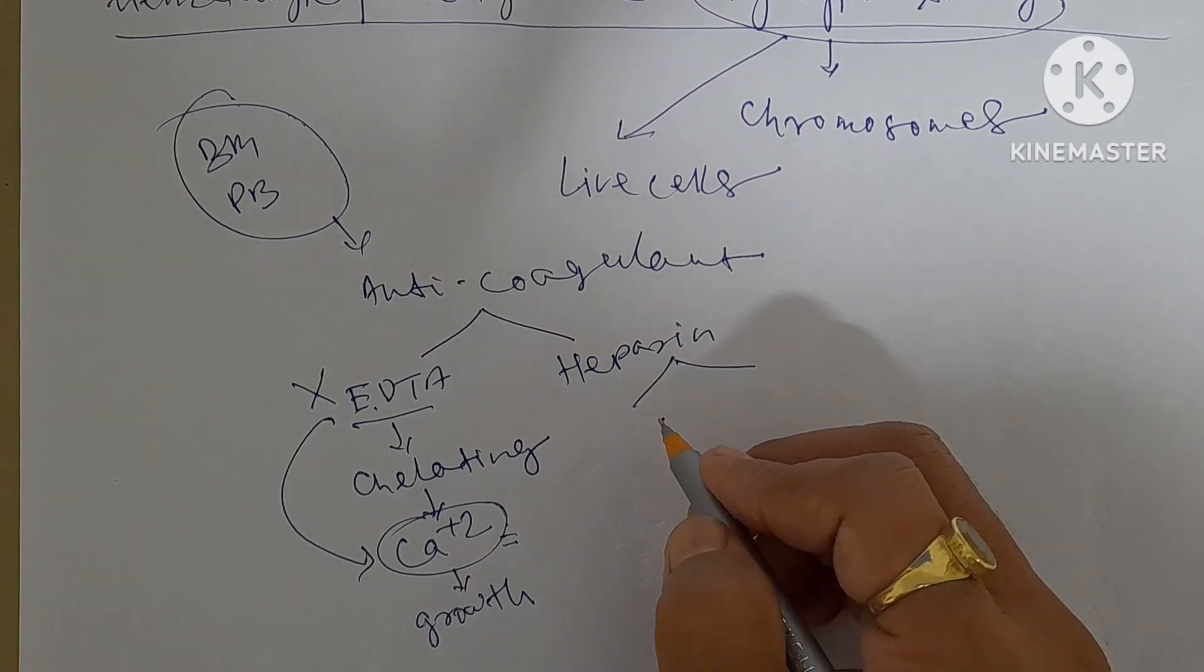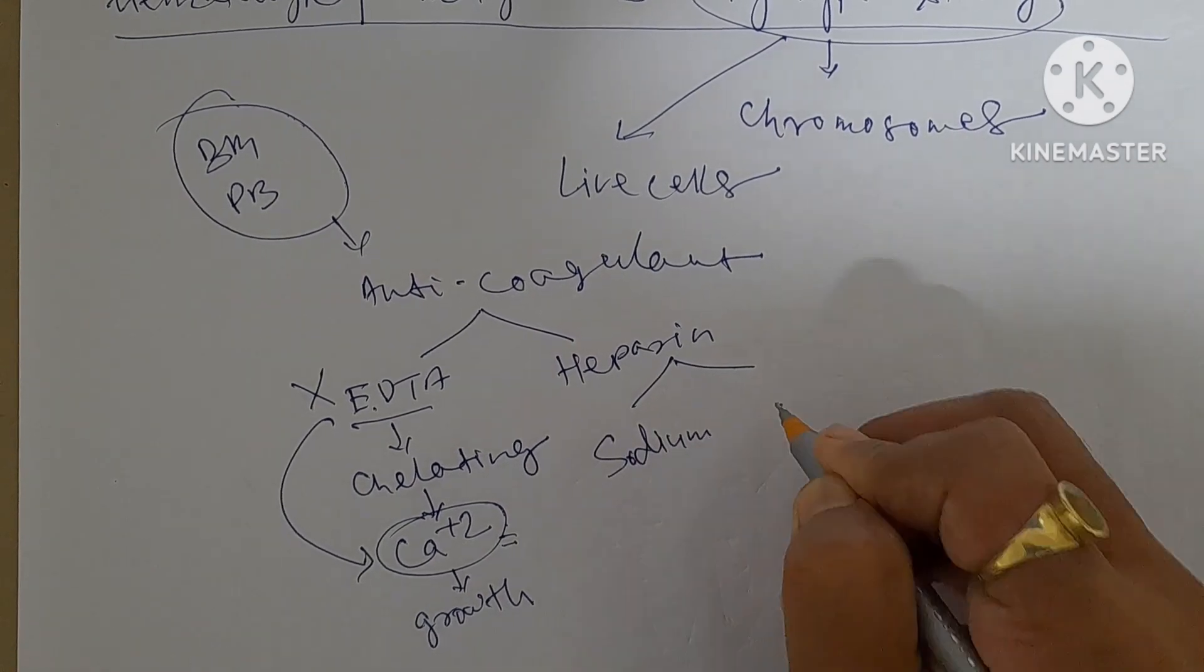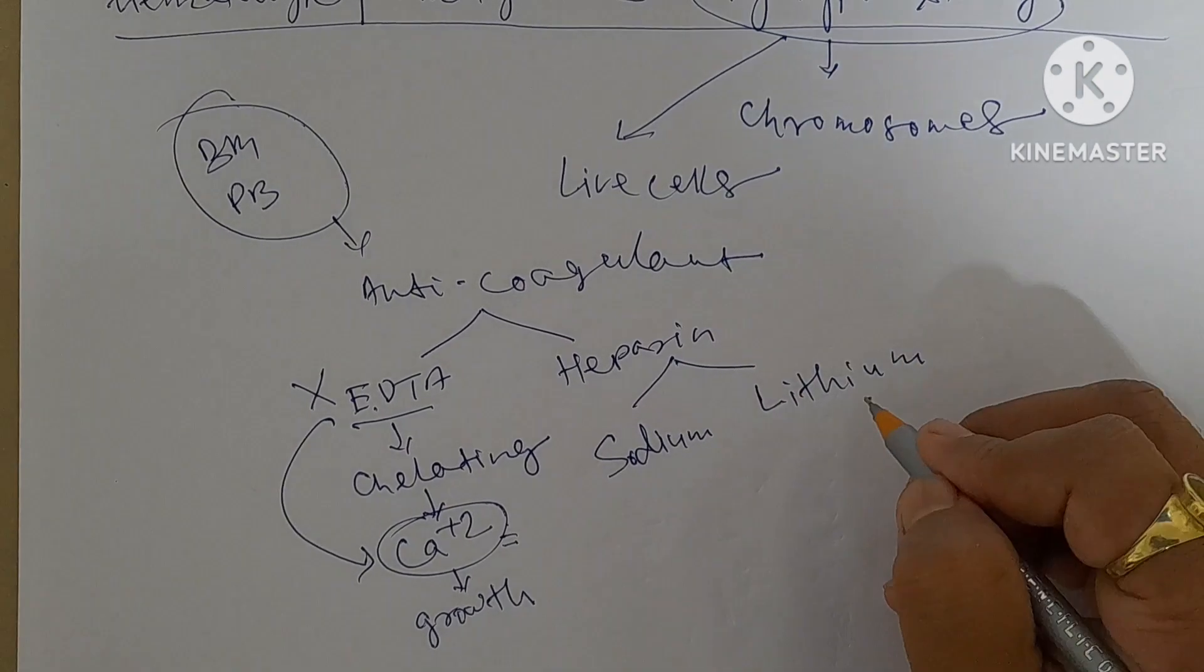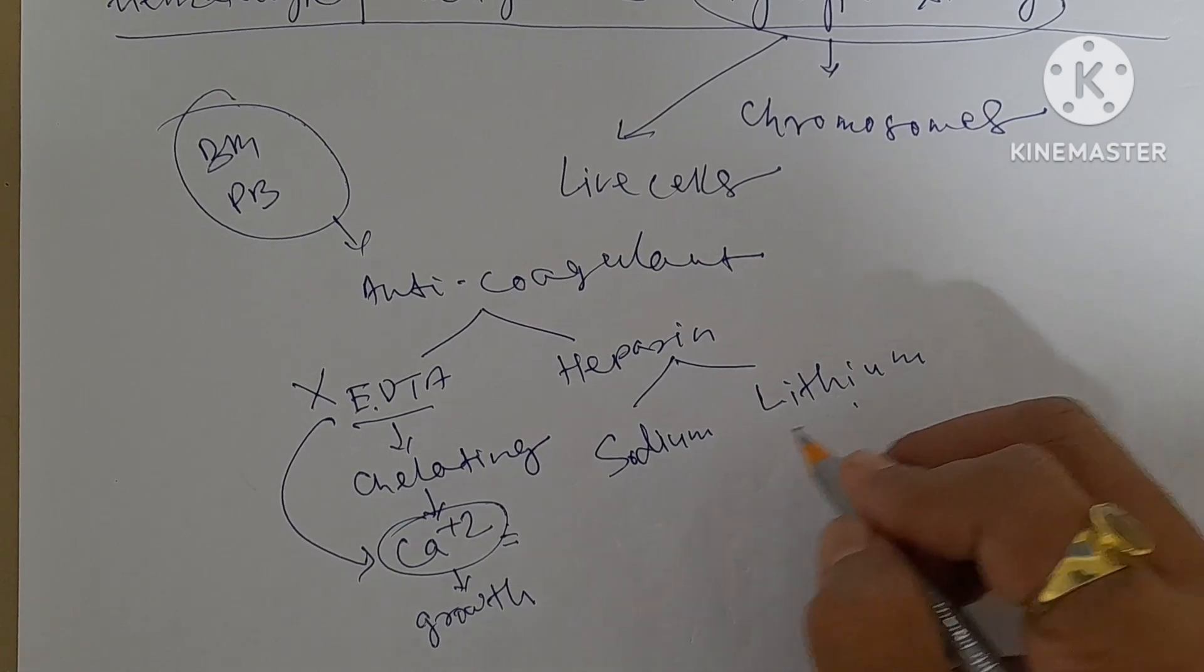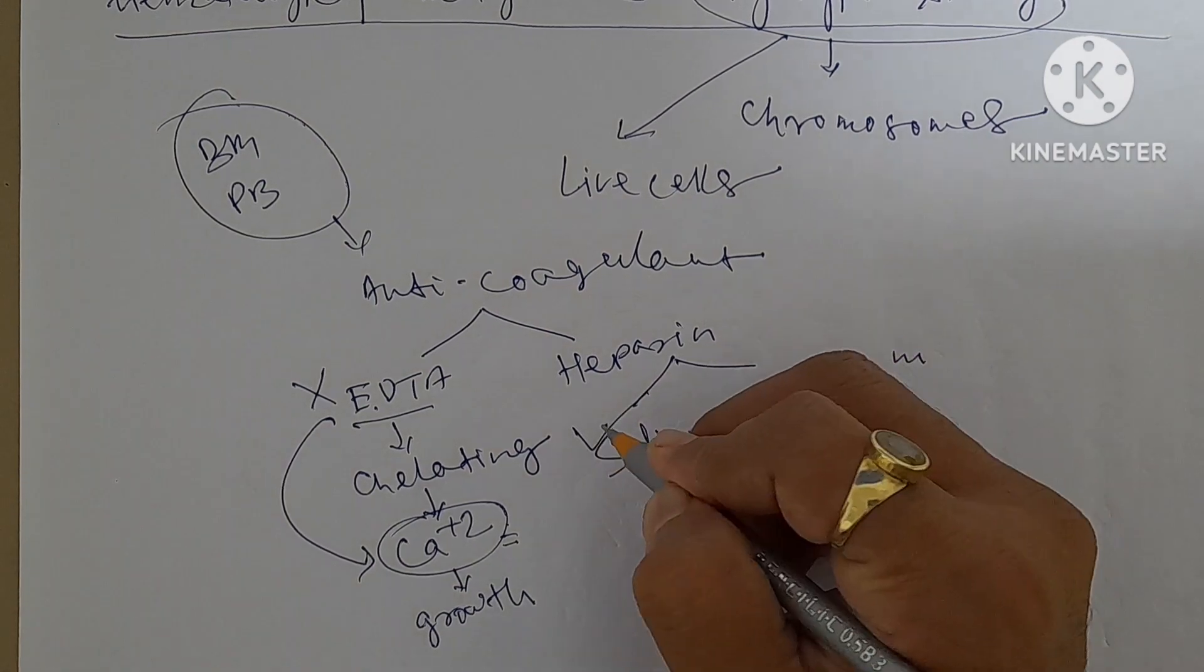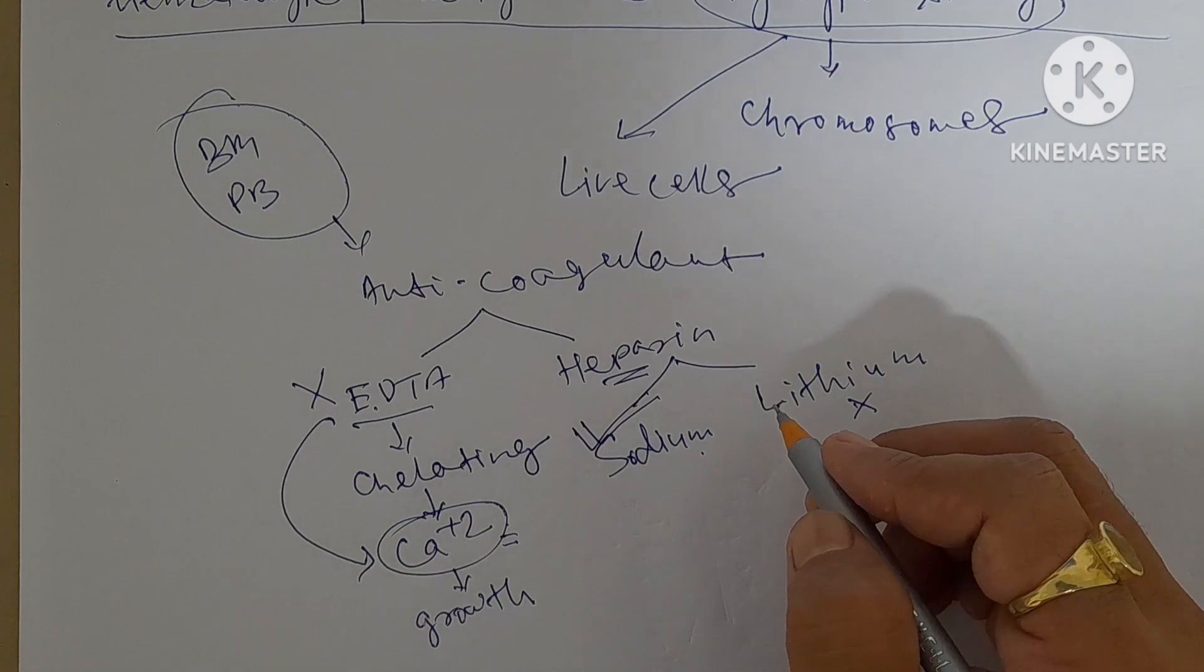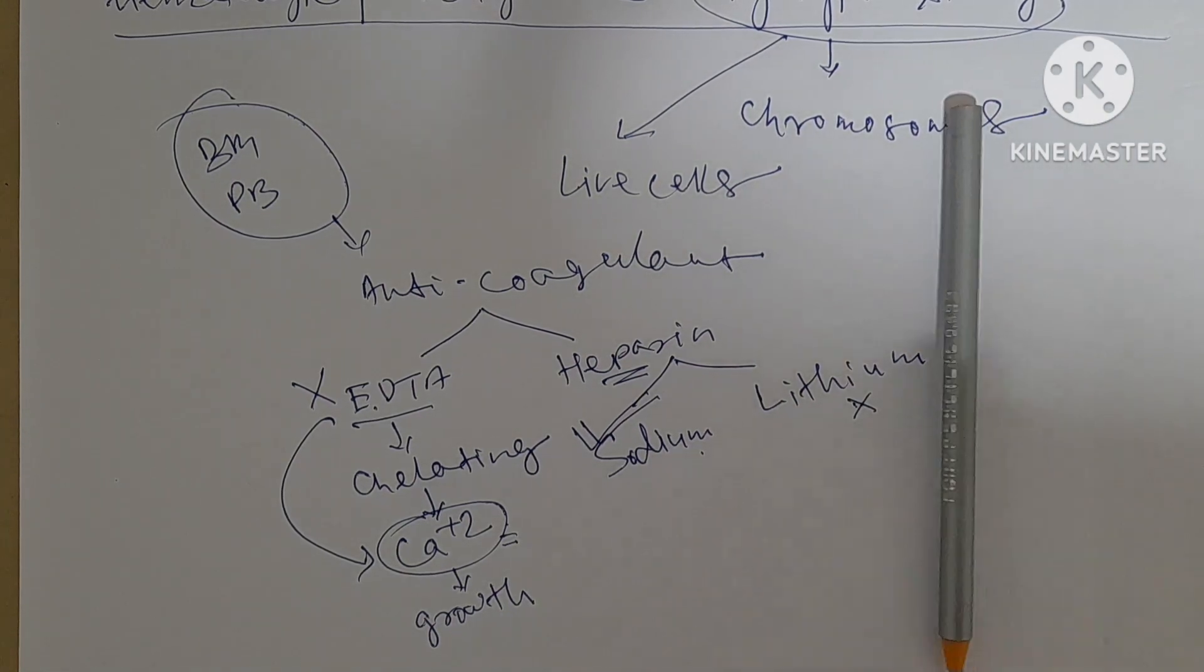Two types of heparin vials are there: one is sodium heparin and another one is lithium heparin. This lithium is a little more toxic compared to sodium. That is why we should always go for sodium heparin vials for samples to be collected for karyotype study.